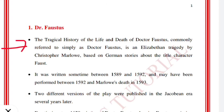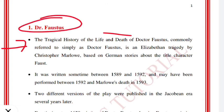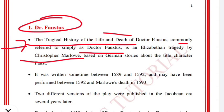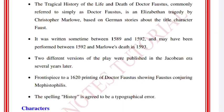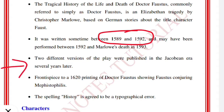We are going to start with Dr. Faustus. Another name is 'The Tragical History of the Life and Death of Dr. Faustus', and it is commonly referred to simply as Dr. Faustus. It is an Elizabethan tragedy by Christopher Marlowe, based on German stories. The title character is the first major character. It was written sometime between 1589 and 1592 and may have been performed between 1592 and Marlowe's death in 1593.